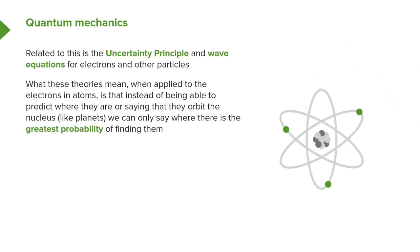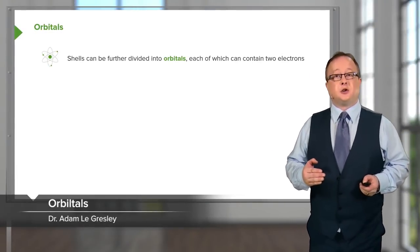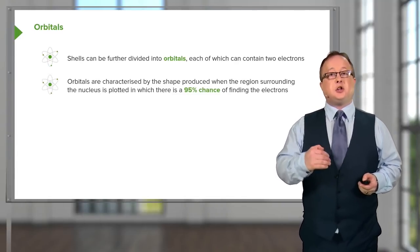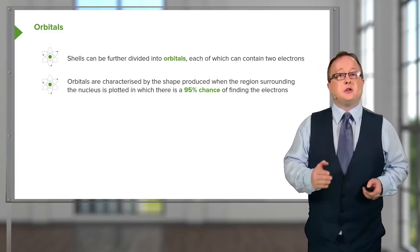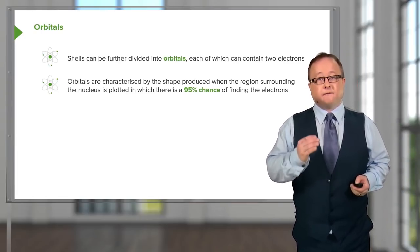When applying quantum mechanics to atom structure, we tend to consider electrons as waves and look at the probability density of finding an electron at a specific distance from a nucleus in a specific shape. The shells themselves can be divided into orbitals, each of which contains two electrons. Orbitals are characterized by a shape produced when the region surrounding the nucleus is plotted, in which there is typically a 95% chance of finding the electrons.